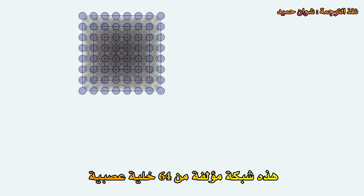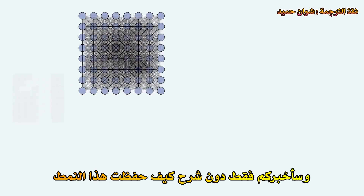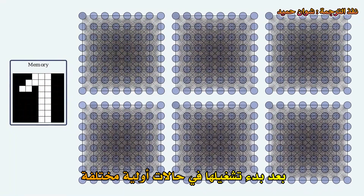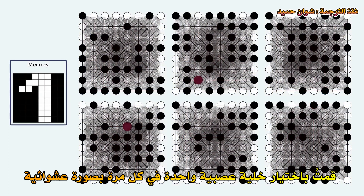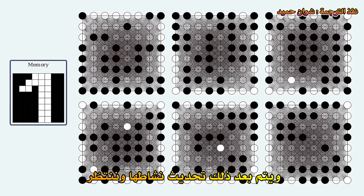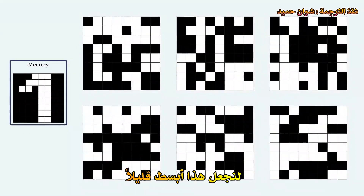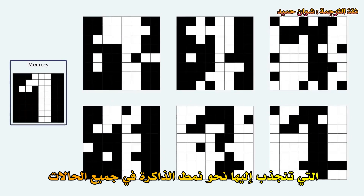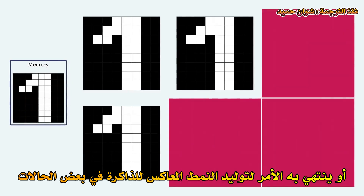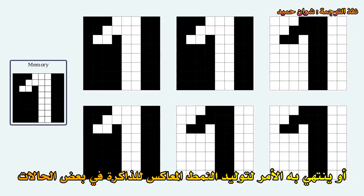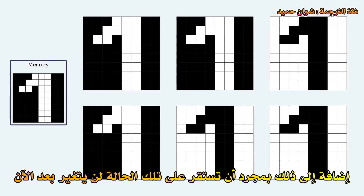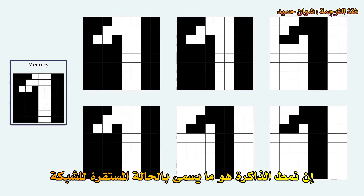This is a network of 64 neurons, and I'm going to tell you that it has memorized this pattern. Starting it off in different initial states and then running the equations I just described — selecting one neuron at a time at random and updating its activity — we can see that the network has this intriguing property: it gravitates towards the memory pattern in all cases. Or, well, it ends up with the anti-memory in some cases. Once it's settled into that state, it doesn't change anymore. The memory pattern is what is called a stable state of the network.